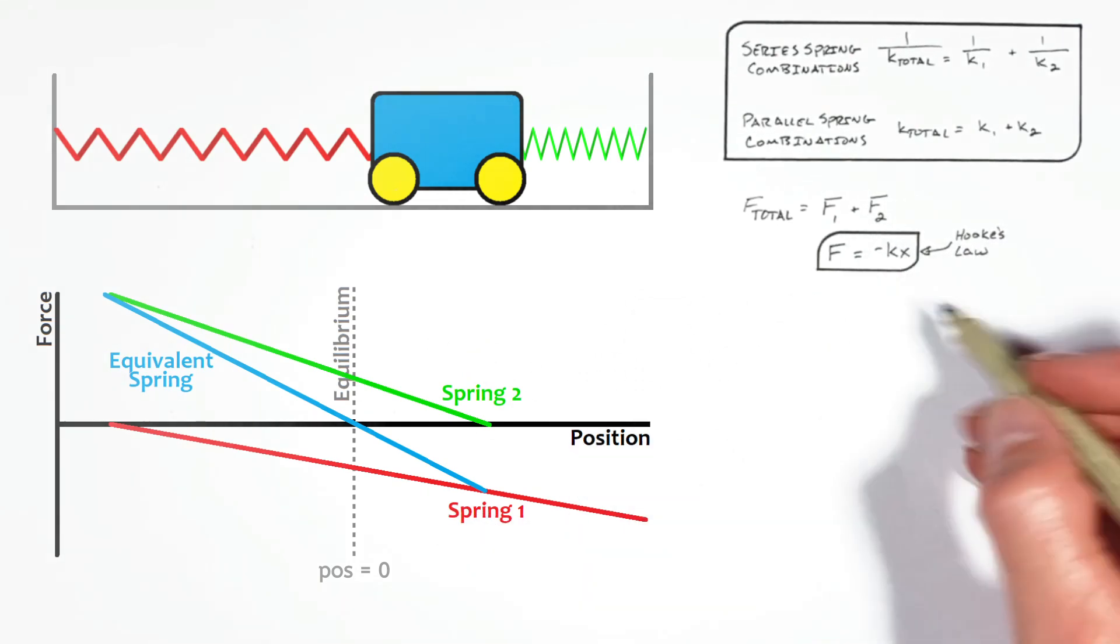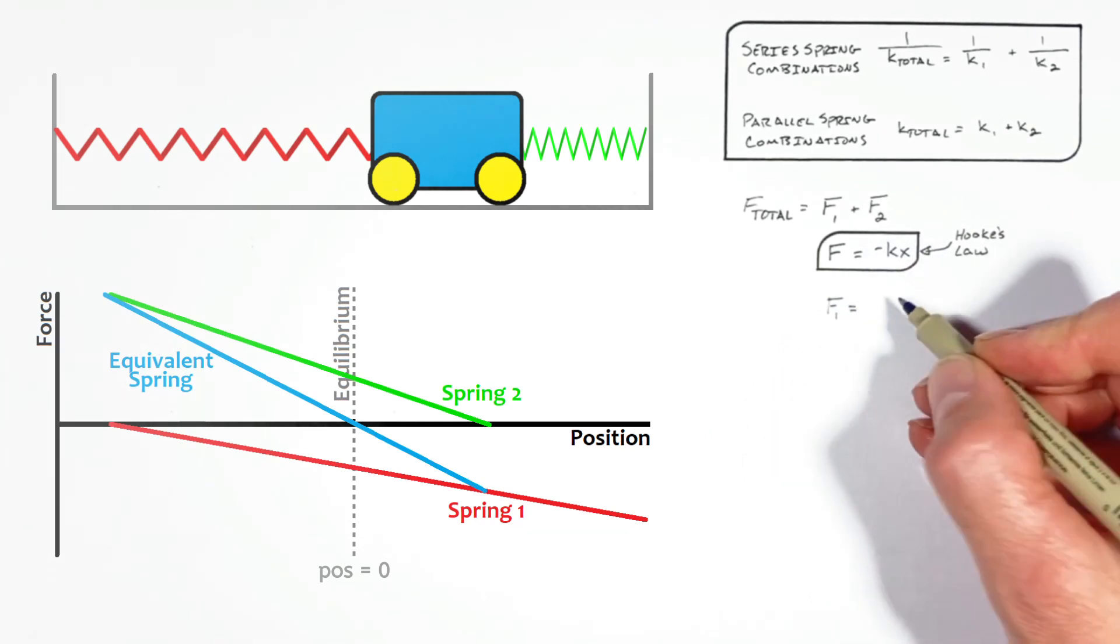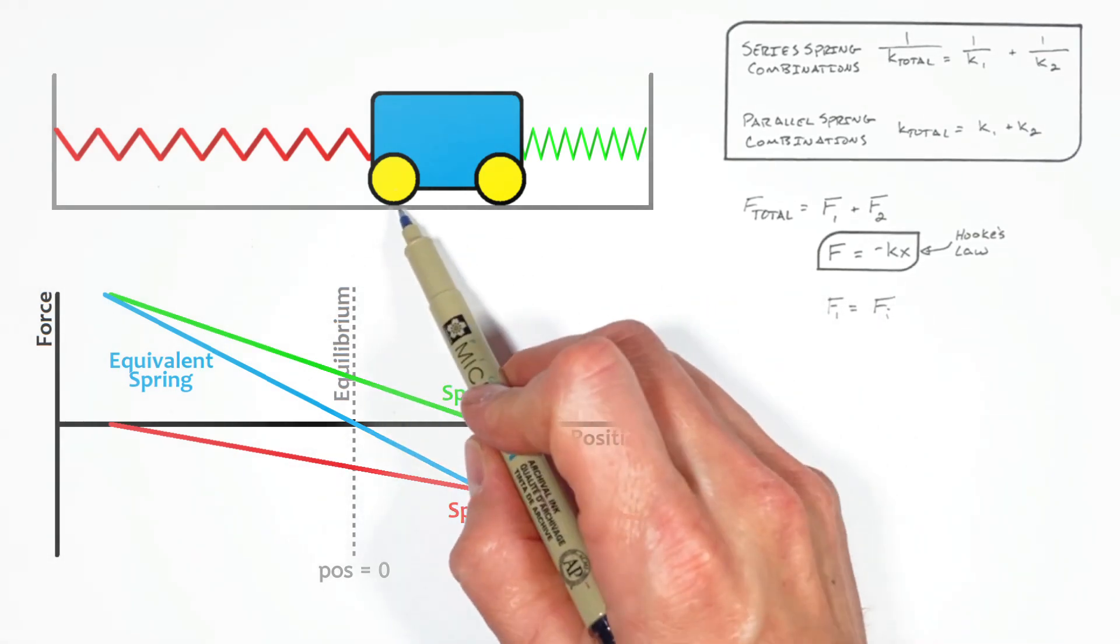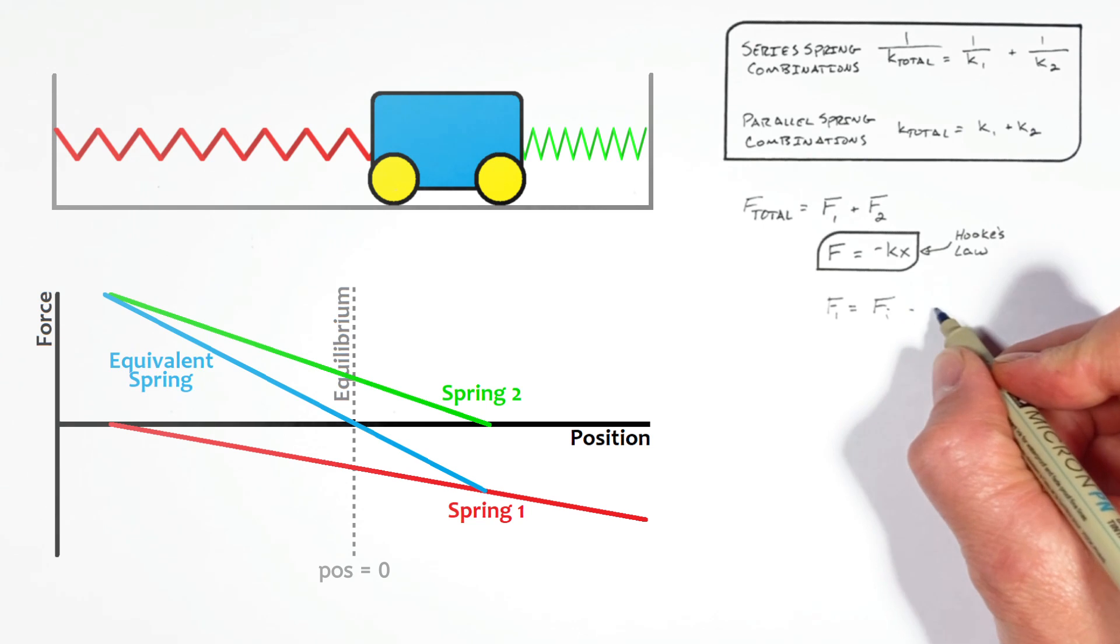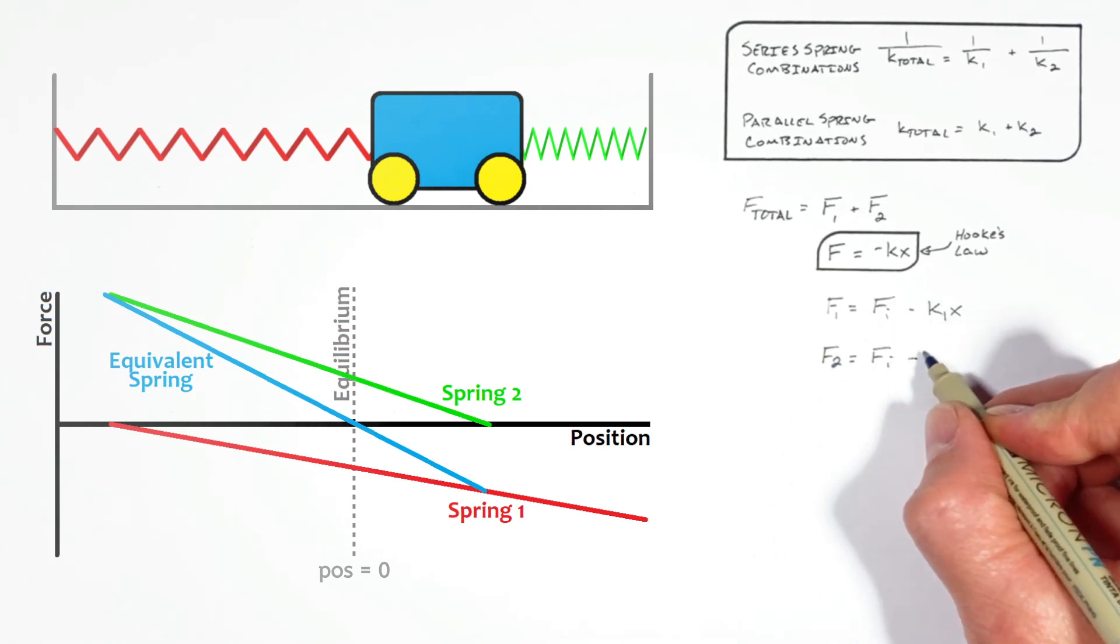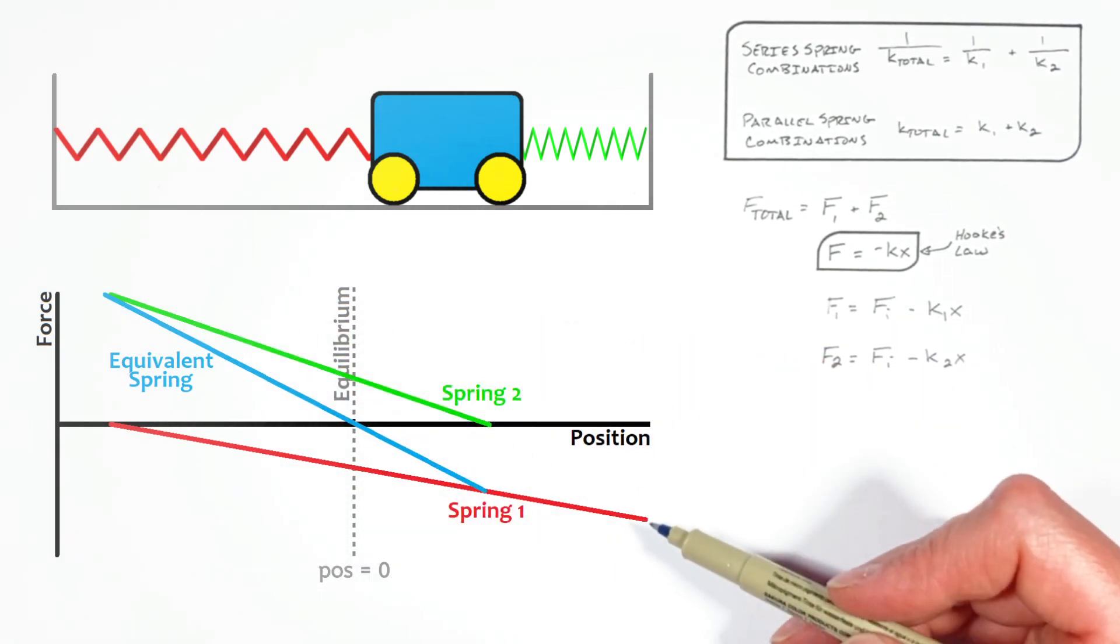So we're going to change Hooke's Law a little bit to say that the force by each spring is equal to the initial force, that is however hard the spring is initially pulling in any direction, minus kx, or k is the spring constant for that particular spring. And these equations are really nothing other than the equations of these lines on our graph.